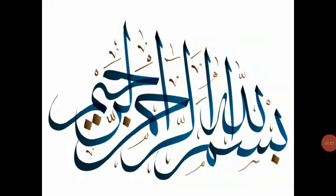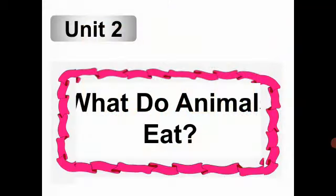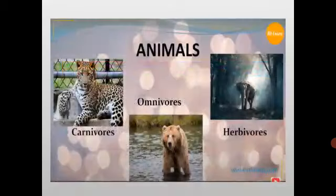Bismillah ar-Rahman ar-Rahim. Assalamualaikum warahmatullahi wabarakatuh. Today we start Unit 2: What do animals eat? Lesson 1 of Unit 2 is Herbivores, Carnivores and Omnivores. Today we learn about a very interesting topic — animals and how they are grouped.